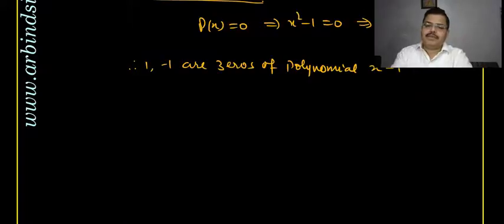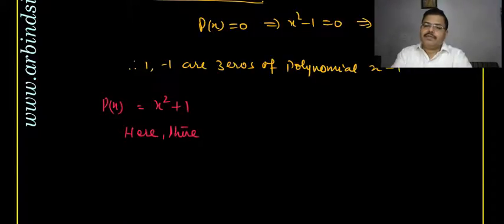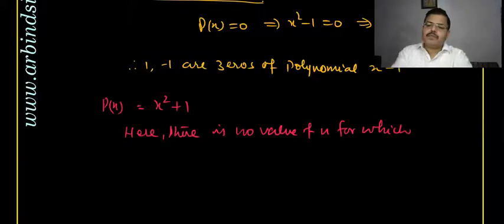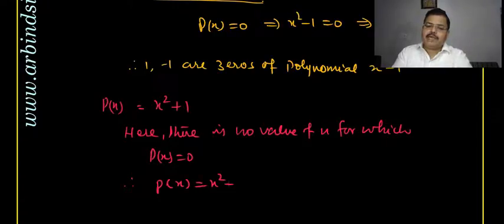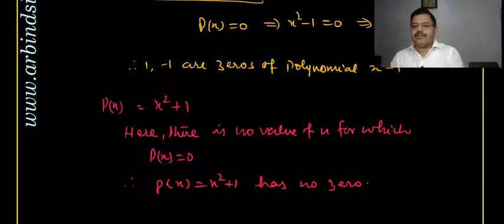It is not necessarily always the case that a zero exists. For example, p(x) = x² + 1 — there is no real value of x for which this becomes zero. There is no value of x for which p(x) = 0, and therefore p(x) = x² + 1 has no zero.